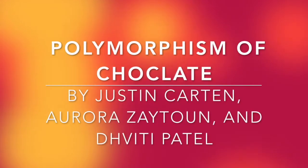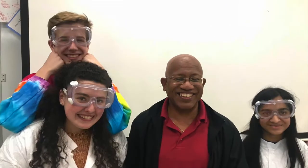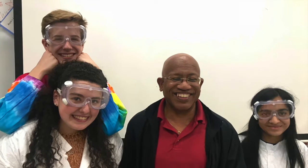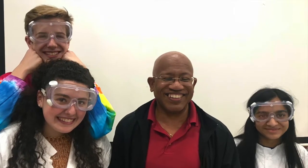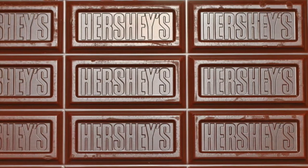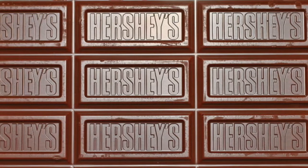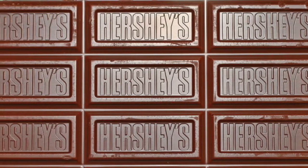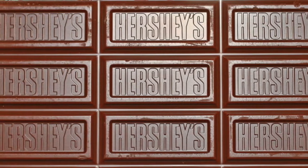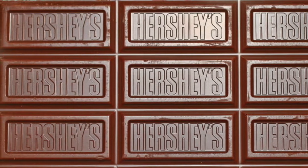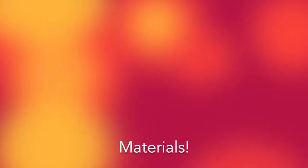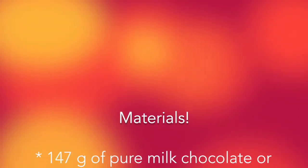The polymorphism of chocolate. Hey, I'm Justin Carton. I'm Aurora Zaytun. And working with Daviti Patel, we study the polymorphism of chocolate. What do we define as polymorphism? Polymorphism, by definition, is existing in several different forms. The main thing responsible for this phenomenon in chocolate is cocoa butter — this ingredient is polymorphic, which is what alters the structure of chocolate at different temperatures. Without further ado, we present our findings on the polymorphism of chocolate.